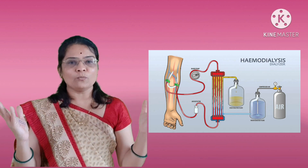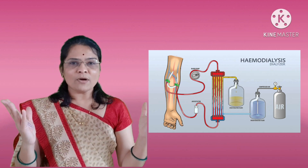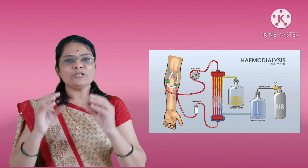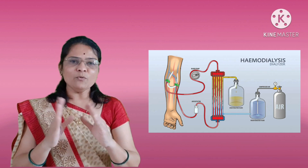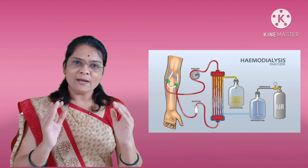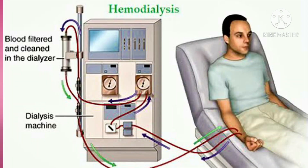This accumulation of nitrogenous waste products may lead to the death of that person. That's why a man-made machine called a dialyzer is used to remove them — this process is called dialysis. When kidney functioning is disturbed, 500 ml of blood is taken for purification, the nitrogenous waste products are removed with the help of the dialyzer, and the purified blood is returned to the person's body.